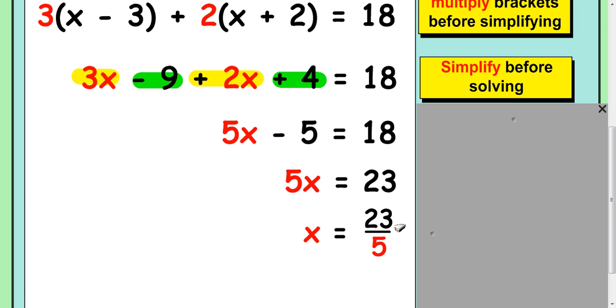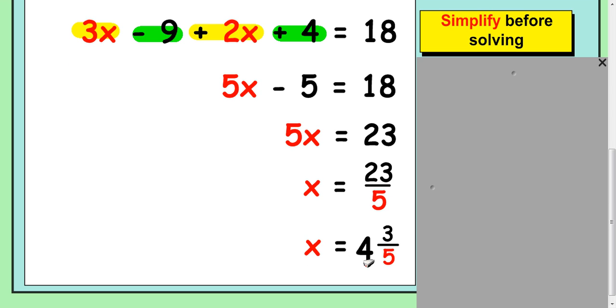How many 5s go into 23? Well, 4 will make 20, and then the remainder 3. So it's 4 and 3 fifths.